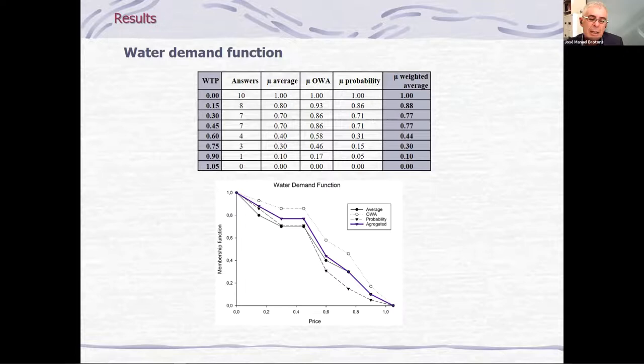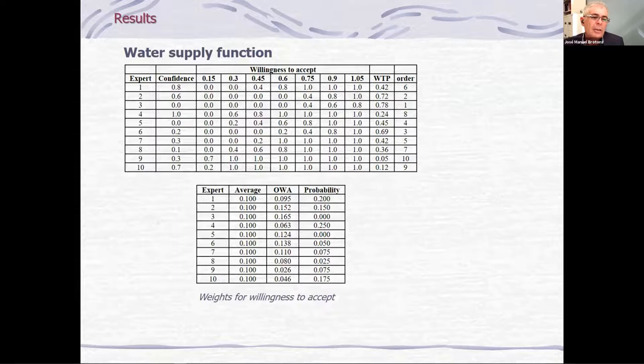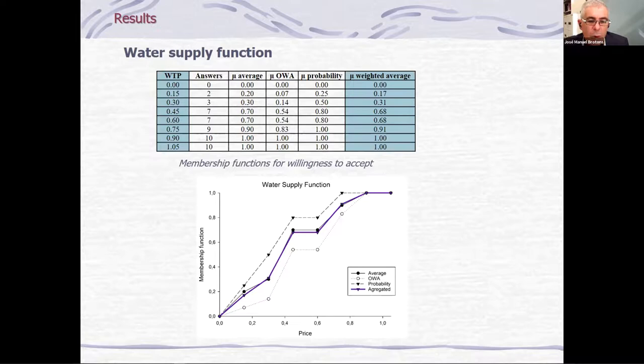We have done the same for the water supply function. The average is similar. The members are similar. The average, all the same. The probability, according to the confidentiality, these experts are different from the experts in the water demand function. And the OWA is according to the order. And here we have the water supply function. To find the equilibrium price, because here, nobody agrees to receive nothing for the water. But it's clear in that case that everyone agrees to receive one peso at the moment.